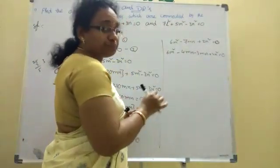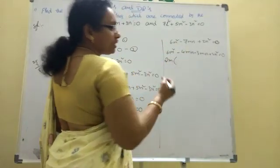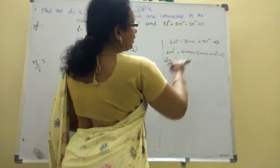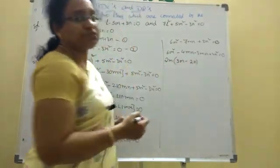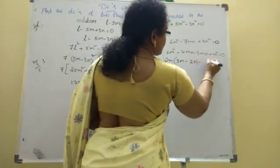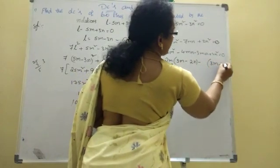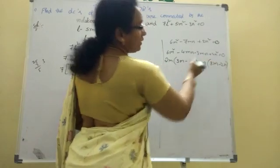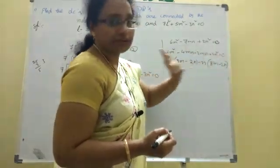The highest common factor here is 2M. Taking 2M common: 2M(3M minus 2N). Then from the remaining terms minus 3MN plus 2N squared, take N common: N(minus 3M plus 2N). So (3M minus 2N)(2M minus N) equal to 0.